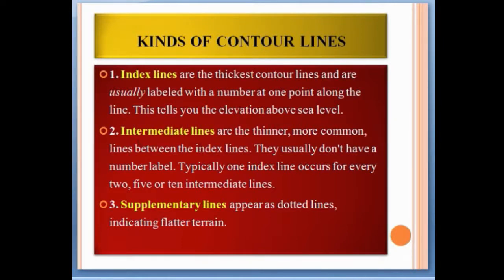Intermediate lines are the thinner, more common lines between the index lines. They usually don't have a number label. Typically one index line occurs for every two, five, or ten intermediate lines. Supplementary lines appear as dotted lines and indicate flat terrain.